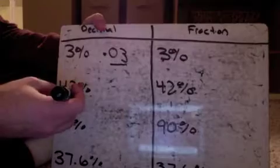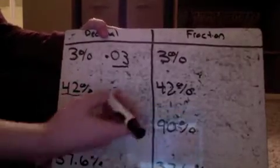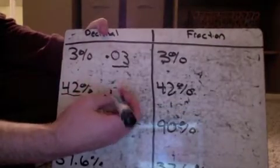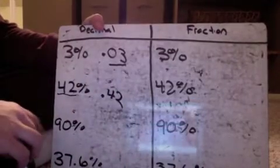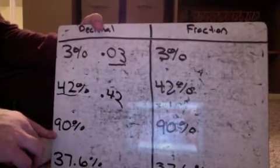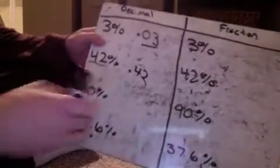42% is really easy. We just take those two whole numbers and we're going to have 0.42. Down here, 90%.